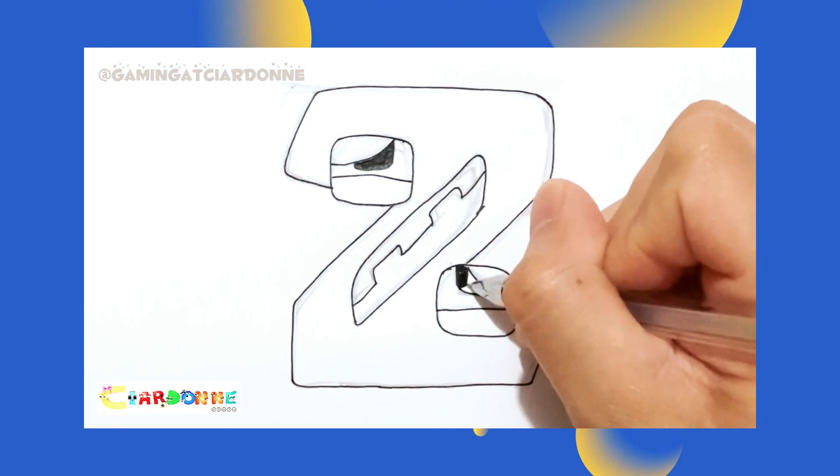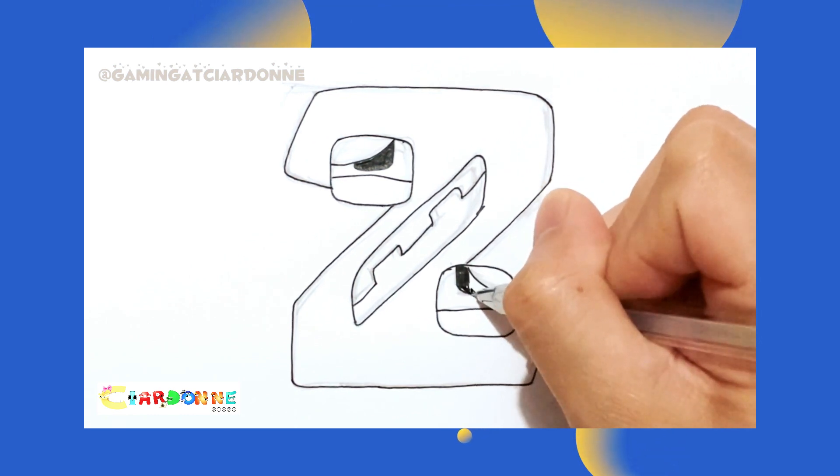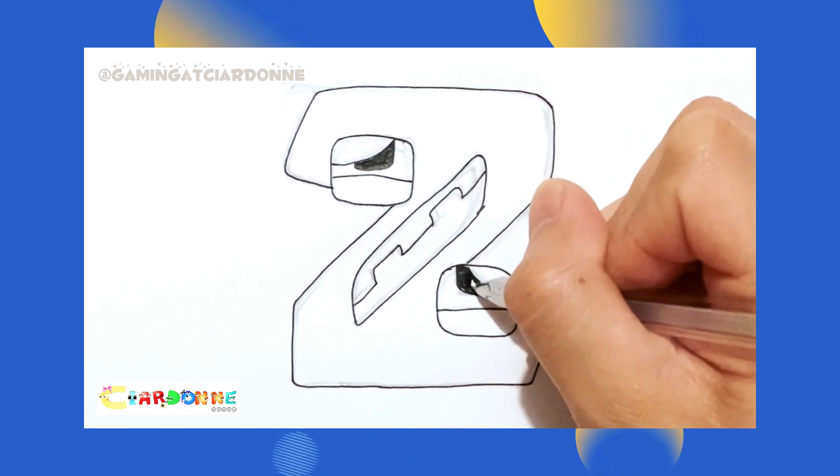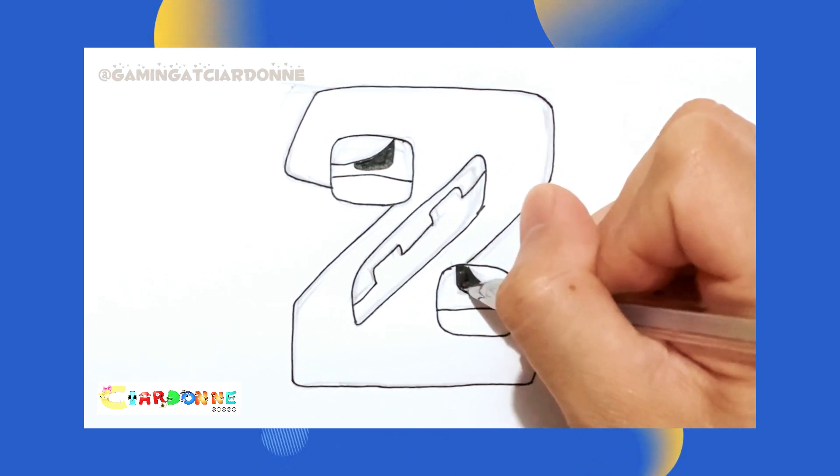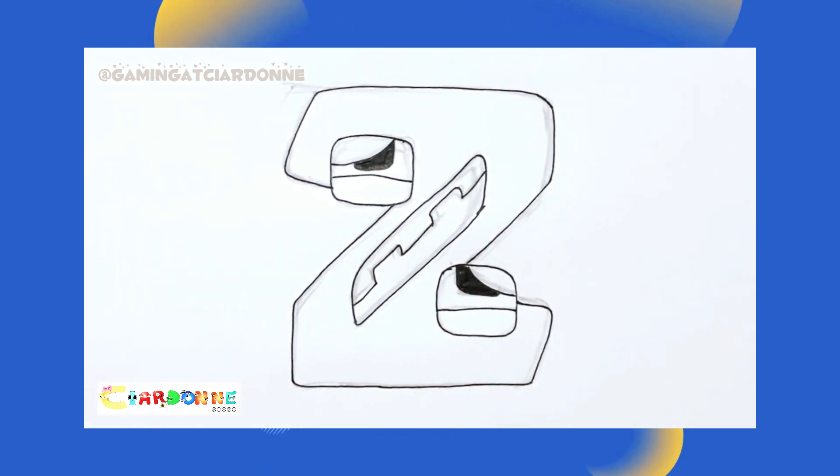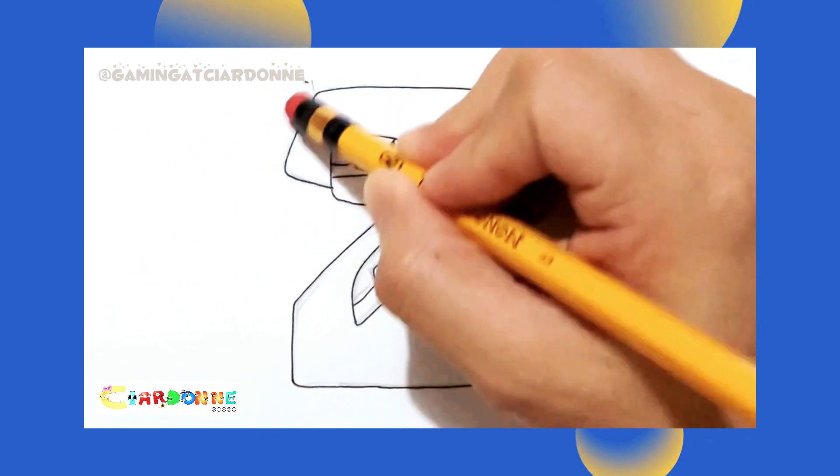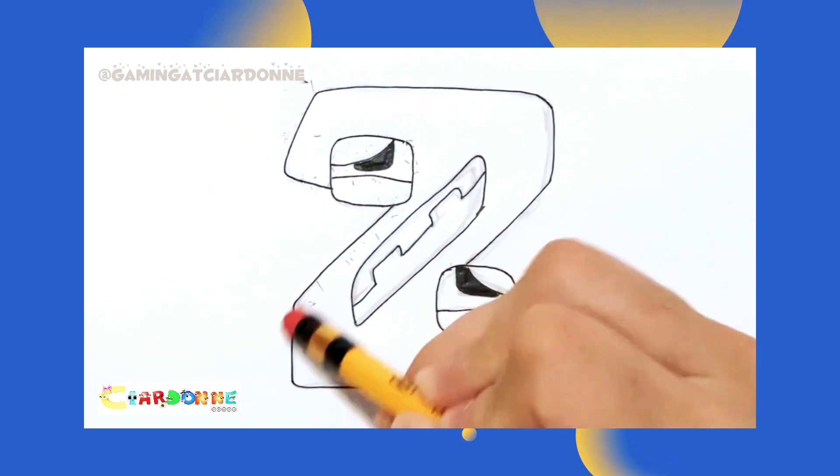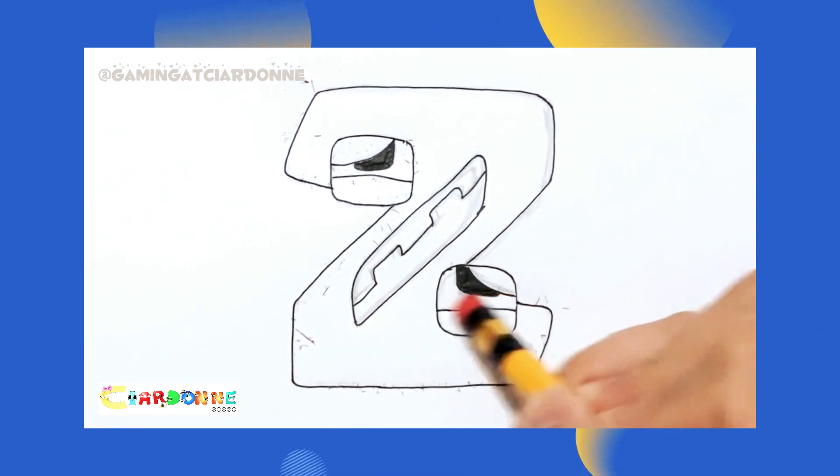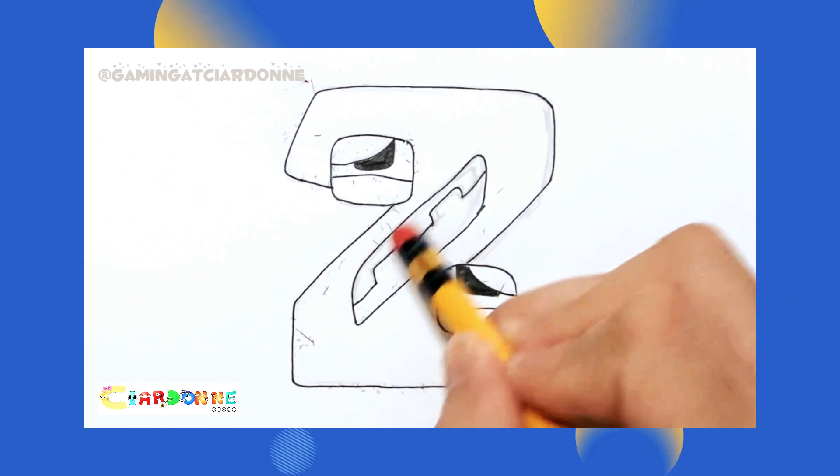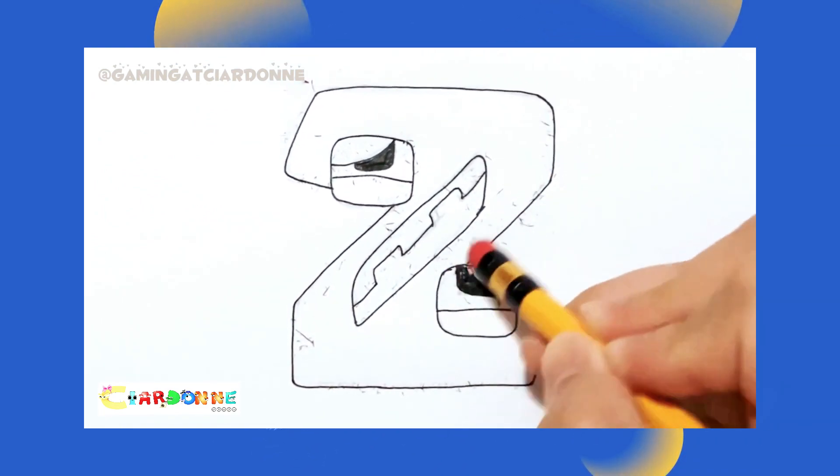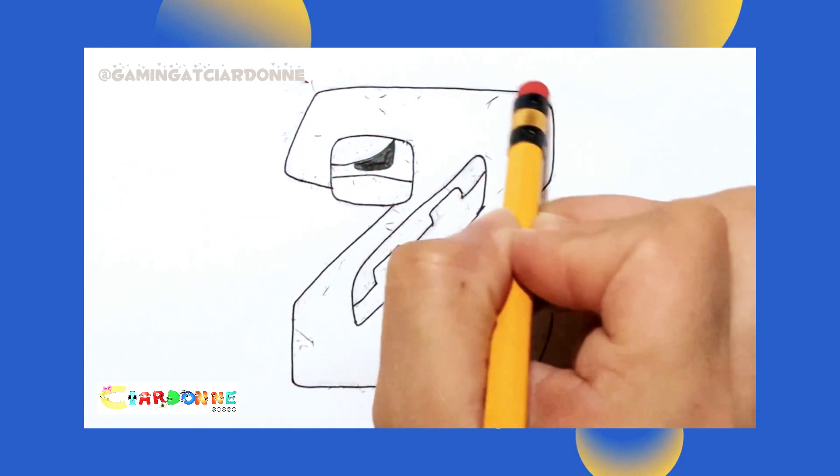As we reach the end of the alphabet, we arrive at the letter Z. It carries a sense of closure and finality, marking the conclusion of a sequence. But in many ways, it also represents a new beginning. With its shape resembling a lightning bolt or a quick stroke, the letter Z exudes energy, dynamism, and the potential for endless possibilities.